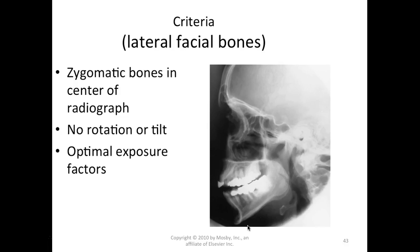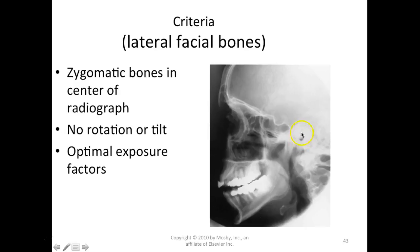For lateral facial bones evaluation criteria, the zygomatic bones should be in the center of the radiograph with no rotation or tilt and optimal exposure factors. When assessing rotation and tilt, we're looking at the orbital plates — we want them superimposed. We also want the ramus superimposed. If the plates are off top to bottom, that is tilt; if they're off front to back, that is rotation.